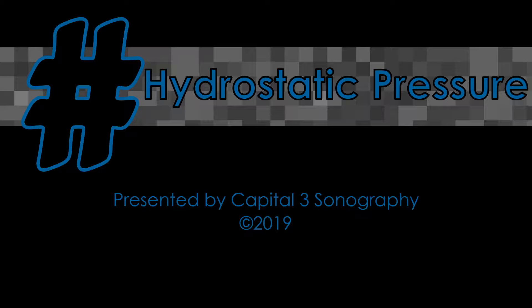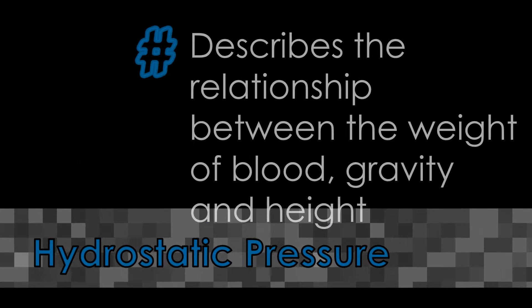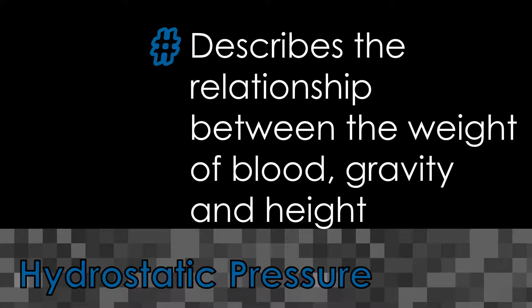Hydrostatic pressure is blood's response to gravity as it sits in our bodies. It creates another type of potential energy that helps move blood through the circulatory system. Hydrostatic pressure is created when a column of fluid such as blood is acted upon by gravity. The density of the fluid and the distance from a particular point also matter. In the case of the body, that particular point is the heart.